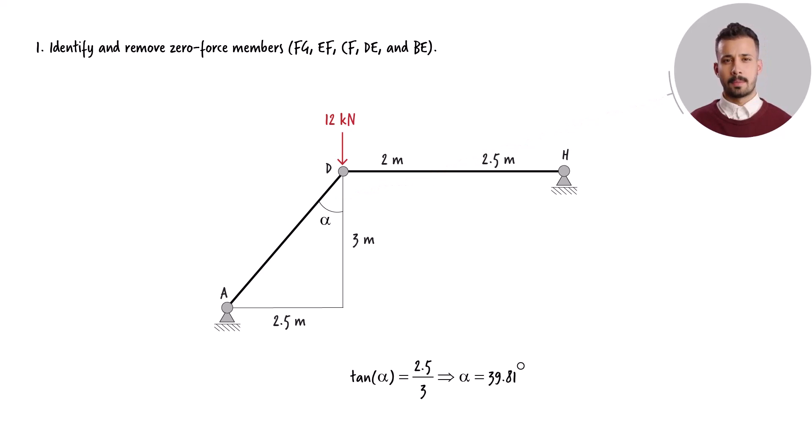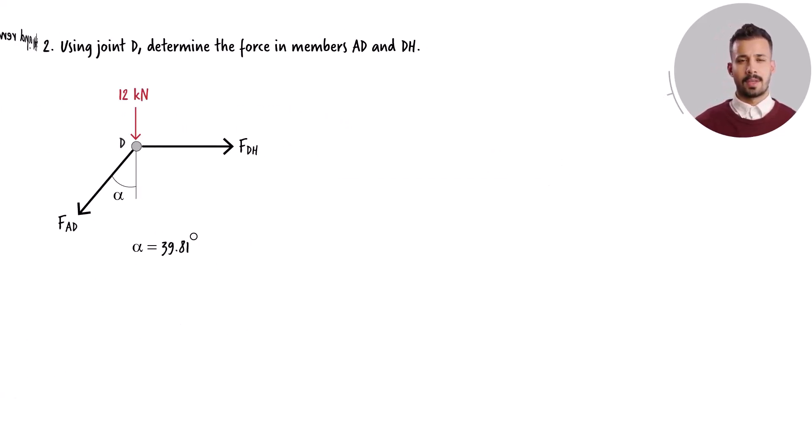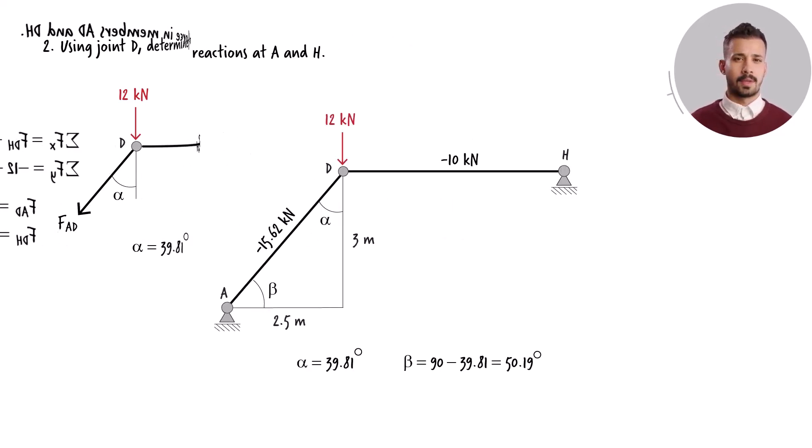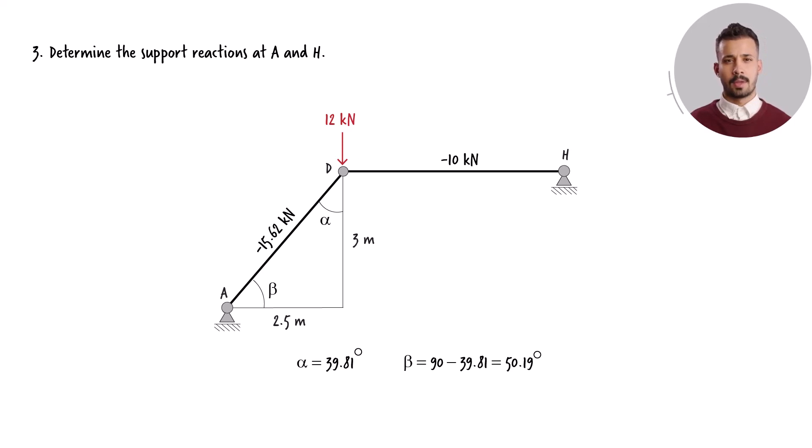To determine the member forces acting at joint D, first we draw the joint's free body diagram. Then we write the joint equilibrium equations and solve them for the unknown forces. The sign associated with each force reveals if the member is experiencing tension or compression. A positive sign signifies that the member is under tension, while a negative sign indicates that the member is in compression. Therefore, here both members are in compression. Let's label each truss member with its corresponding member force.